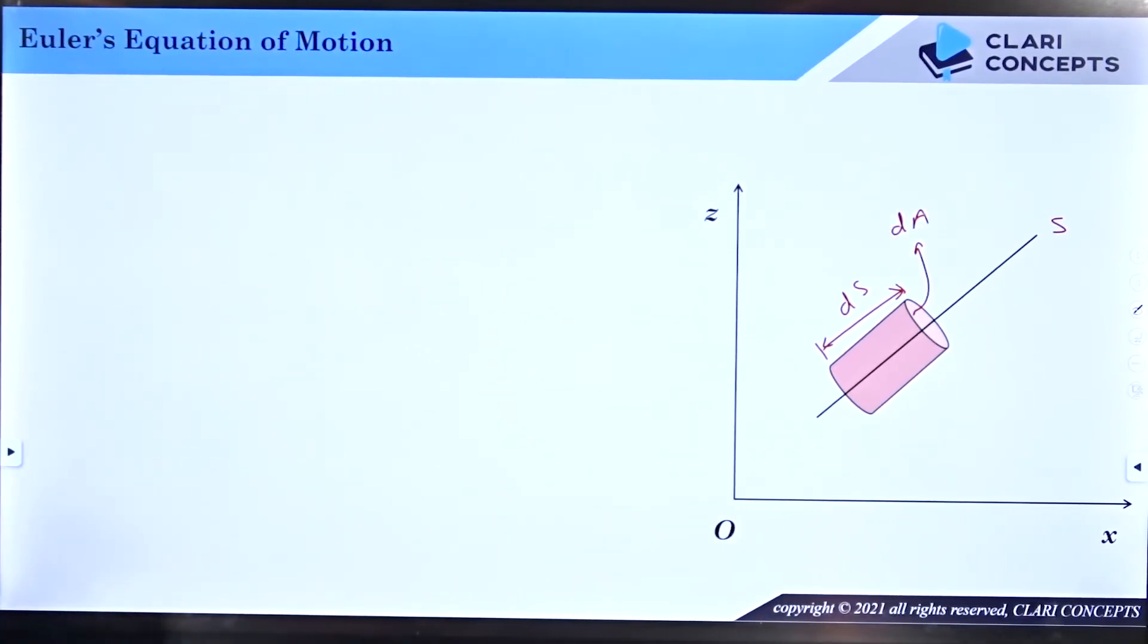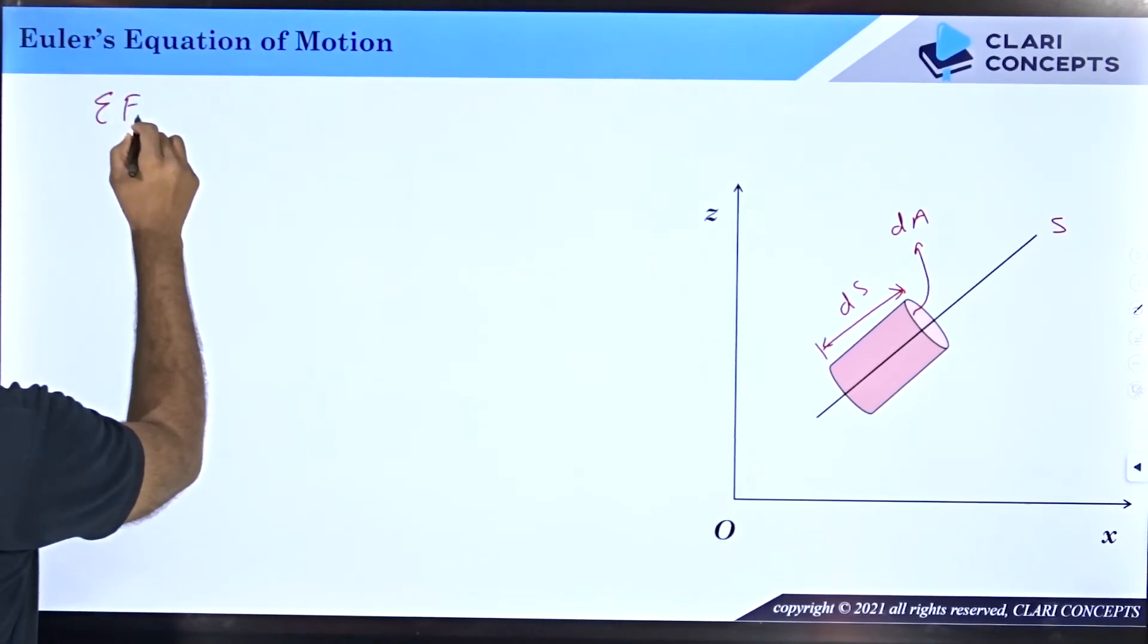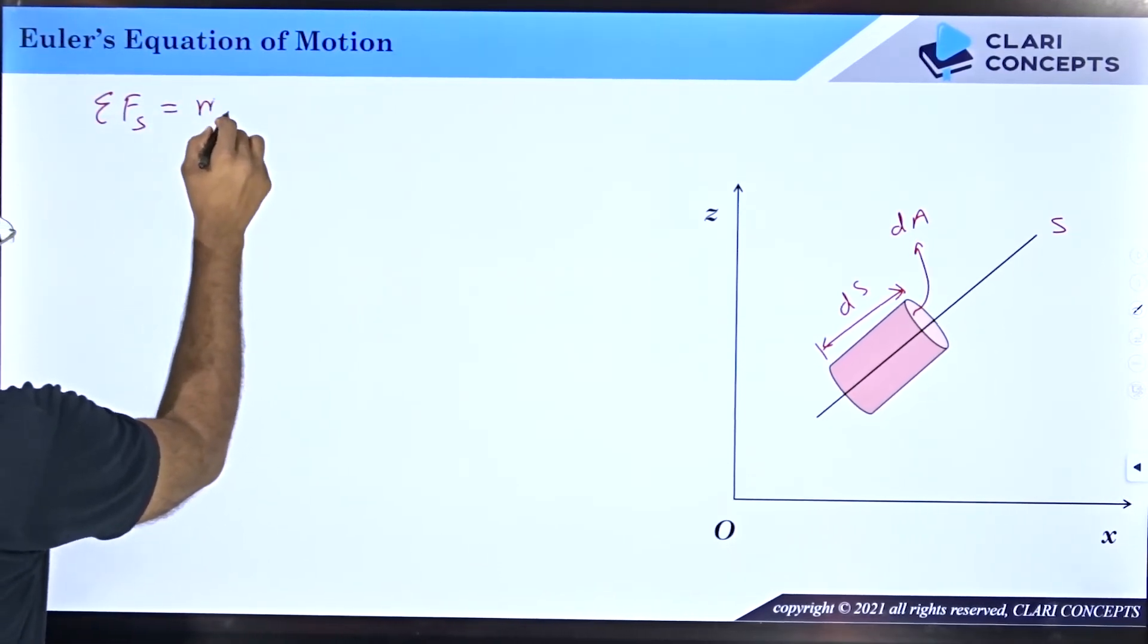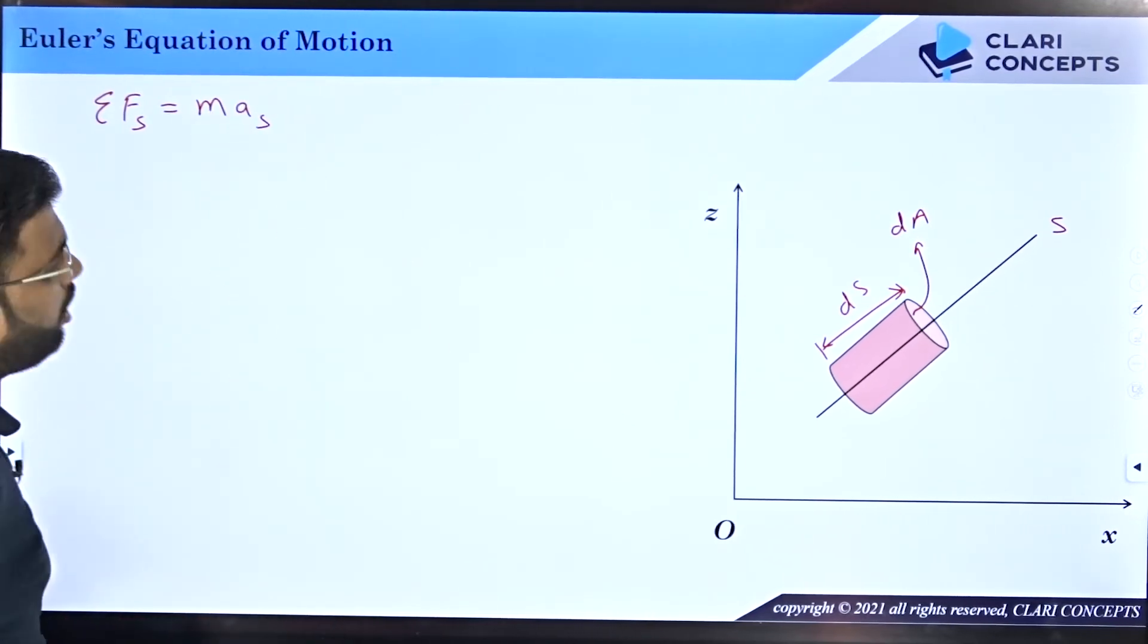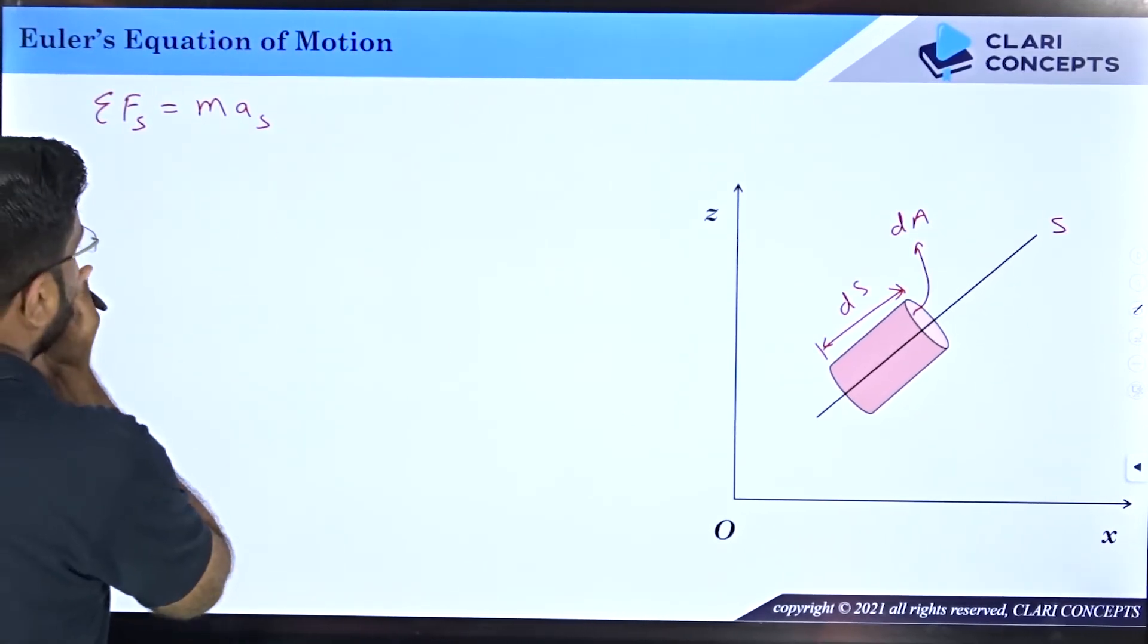As per the energy equation, you can say that summation of forces acting along s direction should be equal to mass of the element and acceleration of the element along s direction. Now what we will be doing is we will try to see what are the forces acting on this element.